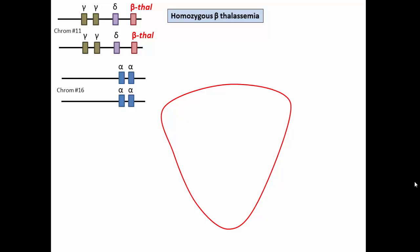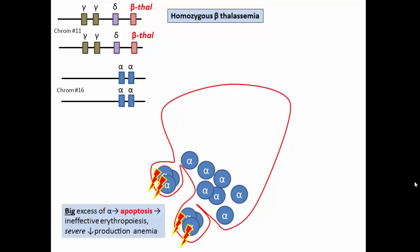When both beta genes carry a thalassemia mutation, there is even more excess alpha globin. These aggregates overwhelm the normal quality control systems, precipitate, become toxic oxidants, and cause apoptosis. This premature death in the marrow defines ineffective erythropoiesis. The amount of excess alpha determines the severity of the decreased production anemia.